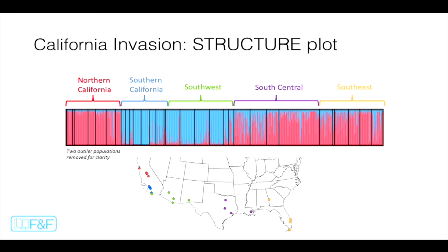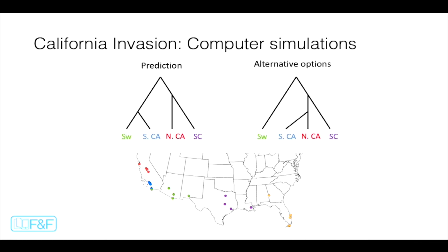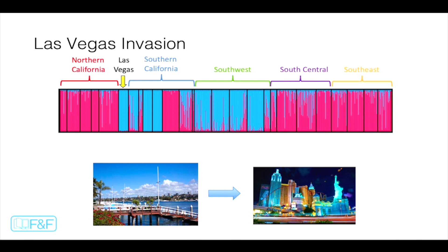This analysis and a few others led us to predict that there were at least two invasions into California, represented by a diagram that you can think of a little bit like a family tree. Another way to test this prediction is to use computer simulations — we had our prediction plus a number of alternative options, and had the computer use those predictions to make big simulated data sets. We then compared each simulated dataset to the real data to see which matched most closely, and the program agreed that our prediction was the most likely scenario. We then added Las Vegas and did similar analyses, which showed that the Las Vegas population most likely came from the Los Angeles or Orange County region — which makes sense because there's a busy highway connecting the two.